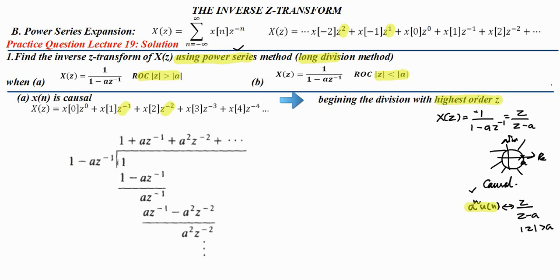First, we need to divide 1 by the constant 1 — so 1 divided by 1 gives us 1 as the first term. Now we need to multiply this 1 with the factor, so we get 1 into 1 minus a z raise to minus 1. After multiplication, you get 1 minus a z raise to minus 1. Now we need to subtract, so we get 0 here and 0 minus minus a z raise to minus 1, which becomes plus a z raise to minus 1.